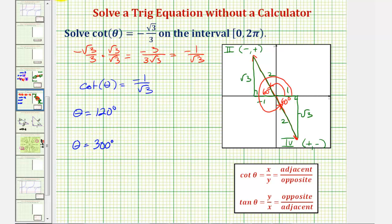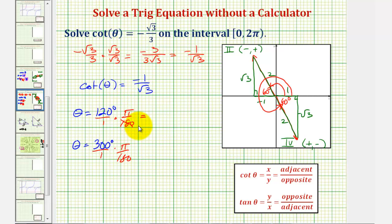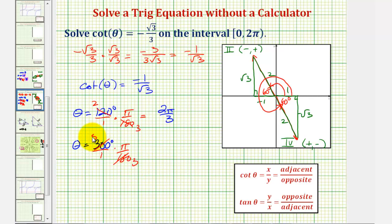Converting to radians: for one hundred twenty degrees, a common factor of sixty — three sixties in one eighty, two sixties in one twenty — gives two pi over three radians. For three hundred degrees, a common factor of sixty — three sixties in one eighty, five sixties in three hundred — gives five pi over three radians.